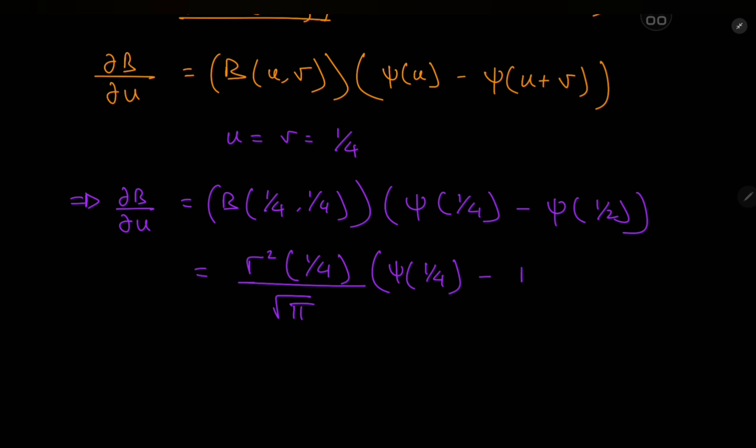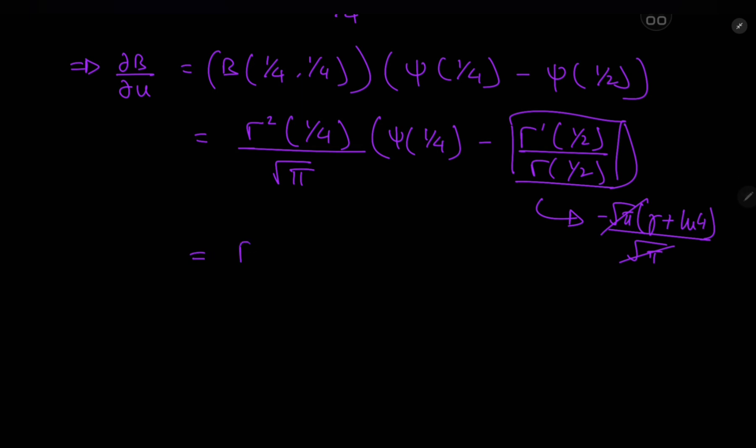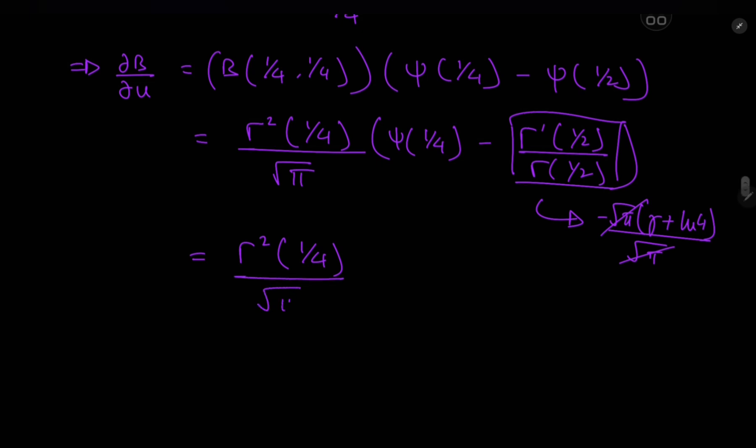And here we have the digamma function evaluated at one quarter. And for digamma one half, I'm going to write this as gamma prime one half divided by gamma one half. And I have this Instagram post, link in the description below, where I've solved important derivatives of the gamma function. One of them is at one half. So, this term here sorts out to being negative root pi times Euler-Mascheroni constant plus log 4 divided by root pi. So, the root pi terms cancel out quite nicely. And we have this beautiful Euler-Mascheroni constant as well. So, that makes things all the more sweet. So, we have gamma prime - we have the square of the gamma function at one quarter divided by root pi times digamma one quarter plus Euler-Mascheroni plus log 4.